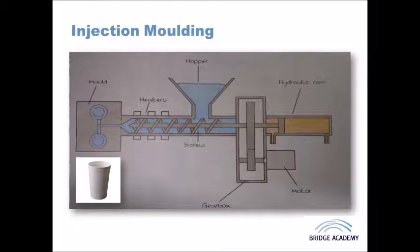The hopper is used to hold all of the polymer granules or powders and any additives that you've mixed in there, so you might be adding plasticizers or UV stabilizers, and basically they're mixed into the hopper before they fall down into that chamber where you've got the Archimedean screw.